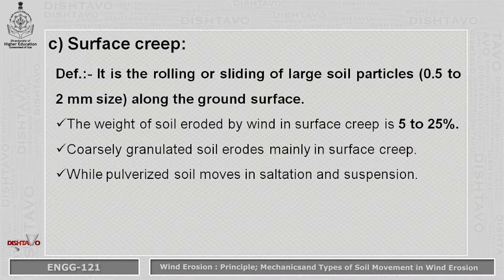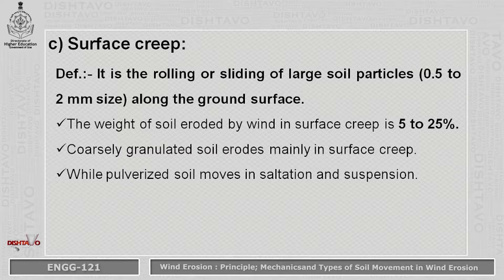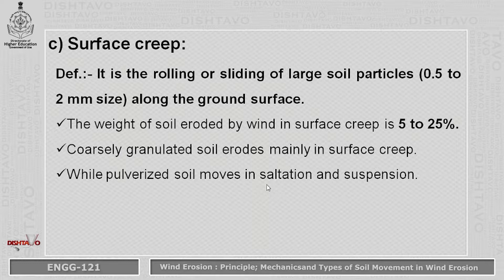The last initiation movement is surface creep — it is the rolling or sliding of large soil particles. The size of these particles varies from 0.5 to 2 mm. The weight of soil eroded by wind through surface creep varies from 5 to 25 percent. Coarsely granulated soil with larger particle size is carried by surface creep, while fine or pulverized soil is carried by the first two phases — saltation and suspension.